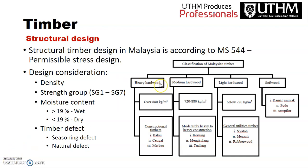Malaysian timber is classified into four categories: heavy hardwood, medium hardwood, light hardwood, and soft hardwood. The details of each category will be explained further in the topic on structural timber design. This video ends here — see you in the next video.